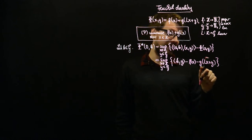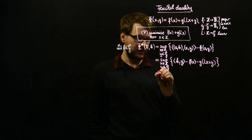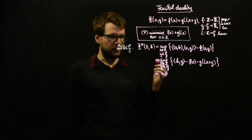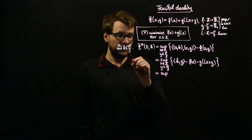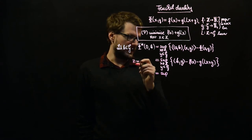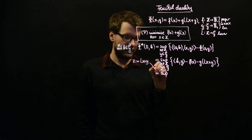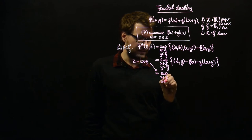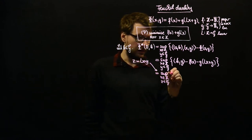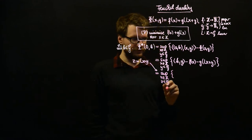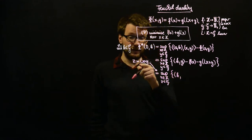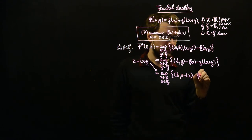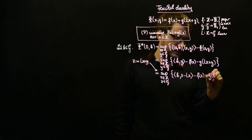We see that we have Lx + y here, so it makes sense to substitute y with another variable. Let z = Lx + y. We now take the supremum over x in H and z in G instead of y, giving the inner product of b with z minus Lx, minus f(x), minus g(z).